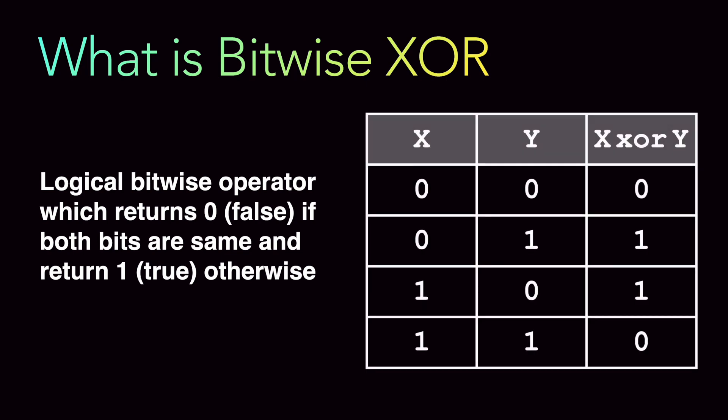If we look at the XOR truth table: say you have a number X and a number Y doing X XOR Y. X values are 0, 0, 1, 1 and Y values are 0, 1, 0, 1. So 0 XOR 0 gives 0, and 1 XOR 1 gives 0 — when both values are the same you get 0. The middle two rows, where values differ, give 1.